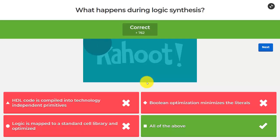So let's go back to our Kahoot. What we said is HDL code is compiled into technology-independent primitives and that's the first part syngen, it basically translates the HDL code into NAND, NOR, that type of primitive gates but they're technology independent. Then we apply Boolean optimization that minimizes the literals in our design. That's called pre-mapping optimization. Finally logic is mapped to a standard cell library and optimized. We take standard cells out of the library and find a mapping between our Boolean optimized design to the standard cell library. These are the three main steps of synthesis.